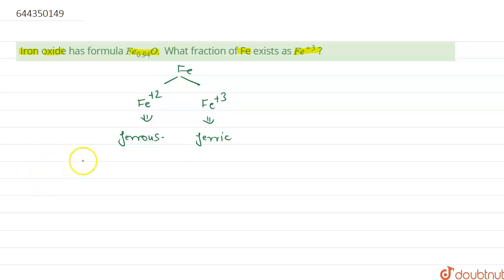Now let's assume that Fe²⁺ is x. We know that iron is 0.94, so it will be 0.94 minus x. Now we'll manage the overall charge.